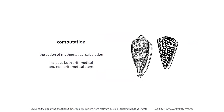Another term I keep referring to is 'computation' — to compute something. Computation is the action of mathematical calculation and includes both mathematical and non-arithmetical steps; in a way, it's like an algorithm. The important idea is that once you use a digital representation of things — for us, that means drawings, images, and design — you can then perform computation on that data. Once you have numbers, you can use them to compute and calculate.